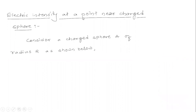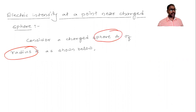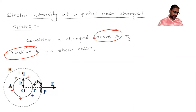Consider a charged spherical conductor A whose radius is capital R. We can see this charge sphere in a diagram. We have to find out the electric intensity at point P, which is at a distance r from the center of this charge sphere.